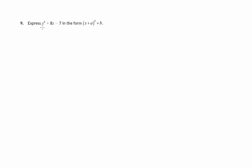In this question we're asked to express x squared plus 8x minus 7, a quadratic expression, in this particular form where we've got an expression squared. This process is called completing the square.